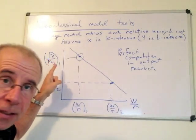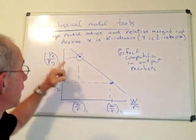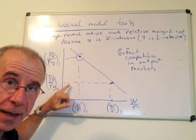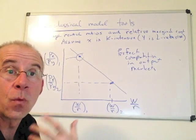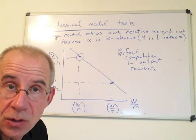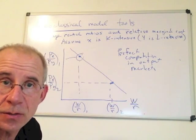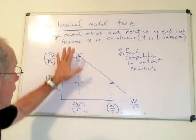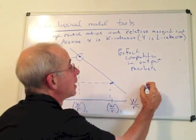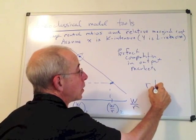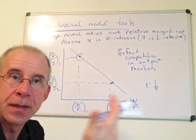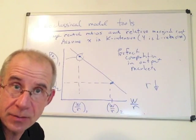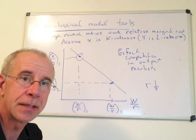Alright, so X is the capital-intensive good. If the price of X is going down, there's less demand for the input that's used intensively in the production of X, so the cost of X in that circumstance would tend to go down, because the demand for the capital-intensive good has gone down. So economy-wide, the cost of capital goes down.